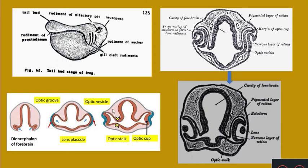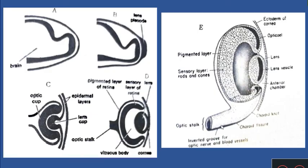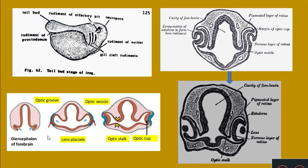A stalk-like structure develops here; this is actually formed by the mesoderm. The mesenchyme converges to this point, narrowing down like a stalk, and this stalk is called as the optic stalk. The basal part of the optic vesicle is connected to the brain by a narrow optic stalk which is formed by the convergence of the surrounding mesoderm.